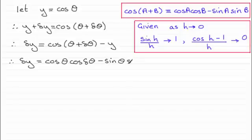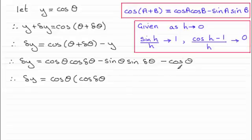And then we've got the minus y here which I replace now with cosine of theta. Now the next thing I do is factorize the first term and the last term. I can see that cosine theta is a common factor. So I have delta y equals cosine of theta times the cosine of delta theta minus 1. And then we've got this second term, minus sine theta sine delta theta.